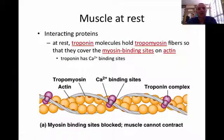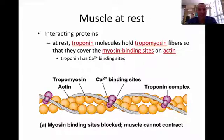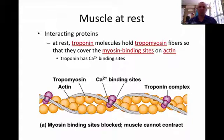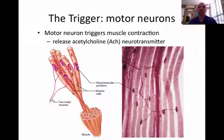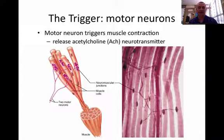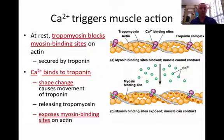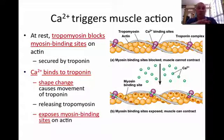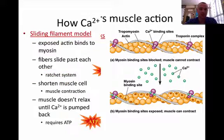When the muscle is at rest, you have troponin, which is molecules that hold tropomyosin fibers so that they cover the myosin binding site, so they don't bind to the actin, and the muscle lays resting. But then motor neurons are going to trigger acetylcholine — a neurotransmitter — to be released, which in turn causes calcium to be released. That calcium then binds to the troponin, which opens the binding site so the myosin and the actin can actually bind together, and the whole process can start.